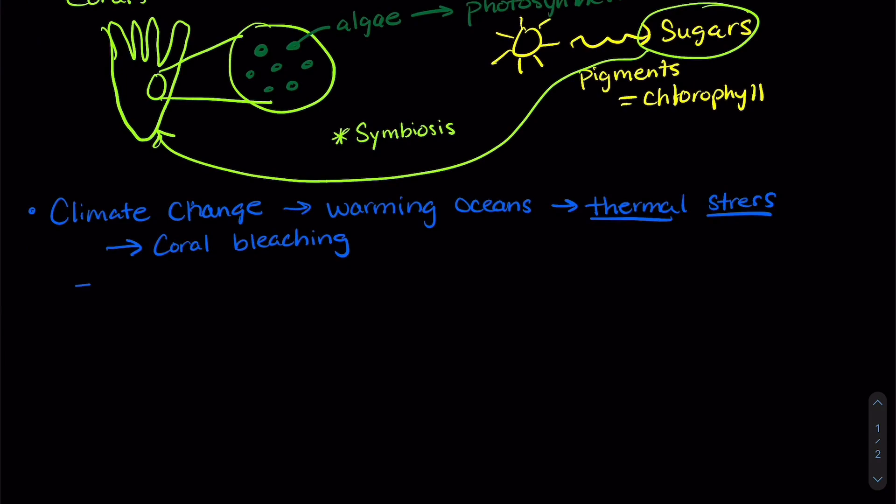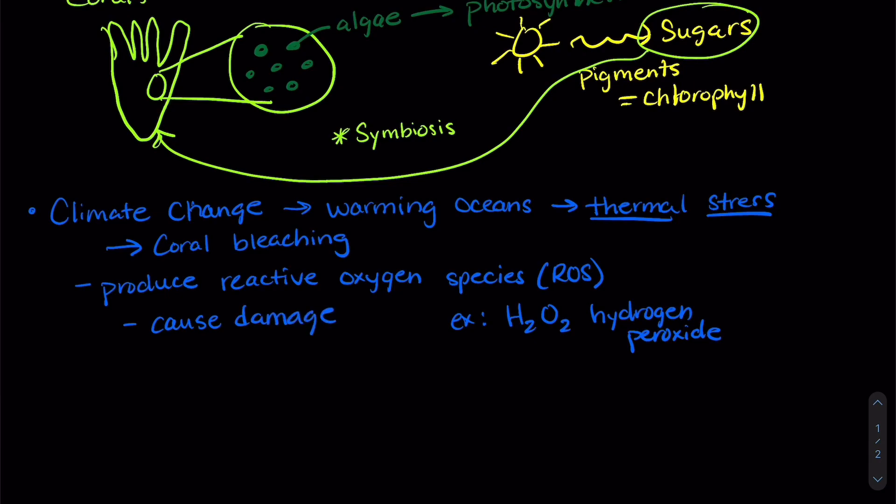And when corals and algae are under thermal stress, they produce these little molecules called reactive oxygen species or ROS. And one example that you're probably familiar with is H2O2, which is hydrogen peroxide. So we can also refer to these reactive oxygen species as free radicals. And the reason that these reactive oxygen species or free radicals are bad is because they're really reactive, like the name says, and they can cause damage by reacting with things that they are not supposed to. So scientists were wondering if there was a way to reduce the amount of these reactive oxygen species to prevent bleaching.